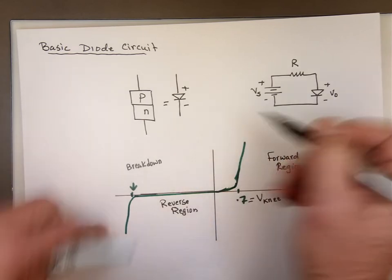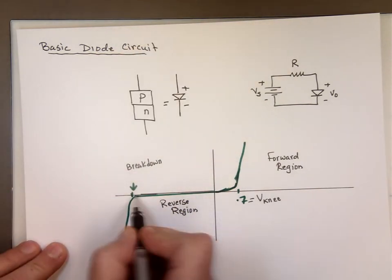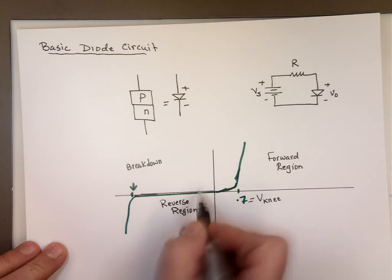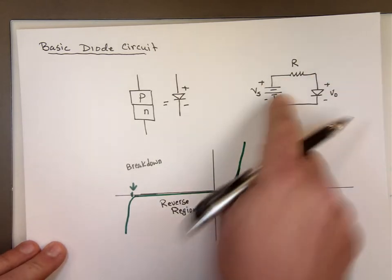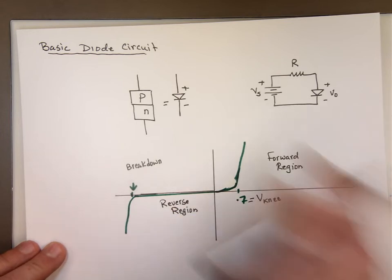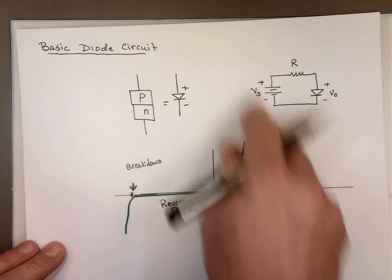When you're in reverse bias, if you reverse that voltage source here, there's no current going through it. It's zero current. Current's not going to go this way through that diode. Unless you reach a breakdown voltage, which we said is roughly about 50 volts. Then you're going to destroy that diode and current will go in that direction.